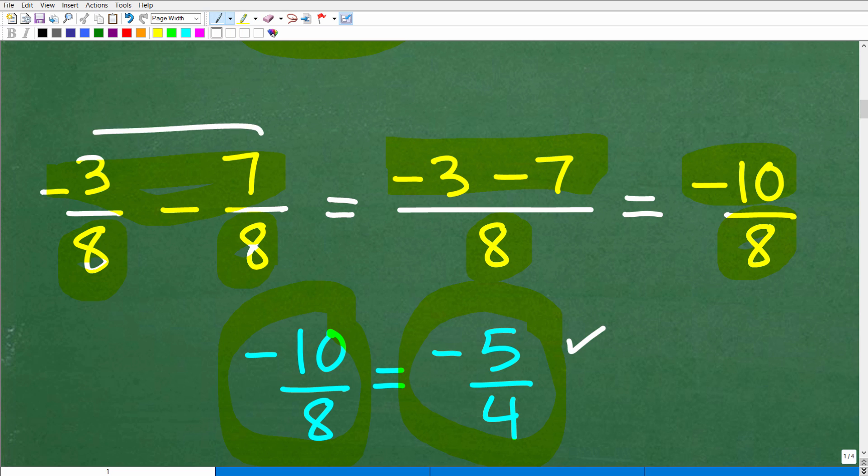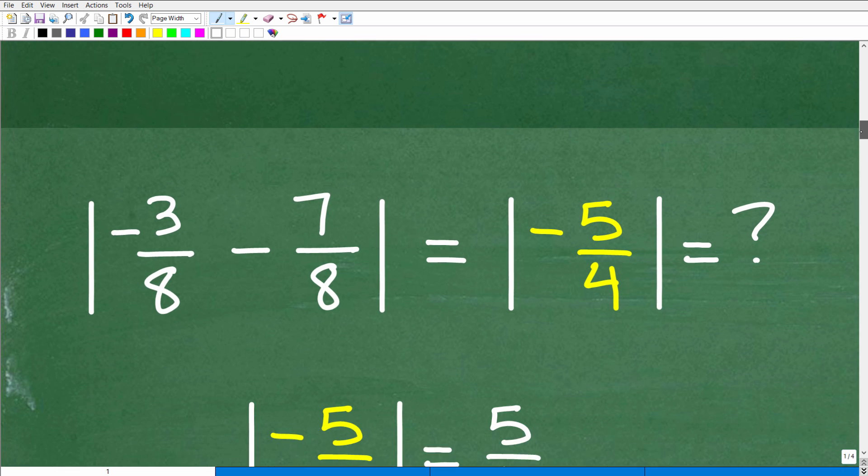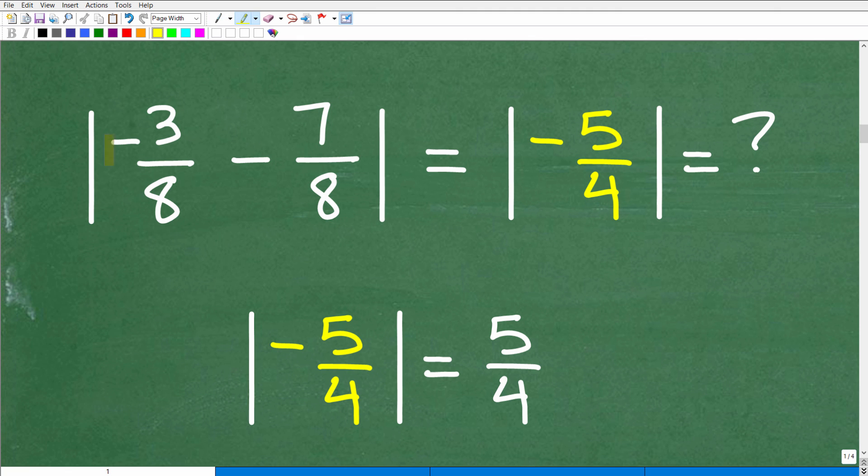And, of course, negative 10 over 8 we can reduce to the fraction negative 5 over 4. Okay, so when we subtracted these two fractions, we got negative 10 over 8. But really, when we reduce that down, we have negative 5 over 4. All right, so what does that mean? Well, let's go ahead and take a look at what this means. So here we have the absolute value of negative 3 eighths minus 7 eighths. We know that is equal to negative 5 over 4. So the equivalent problem is the absolute value of negative 5 over 4. Okay, that's what our problem is really kind of distilled down to. And the answer is a positive 5 fourths.